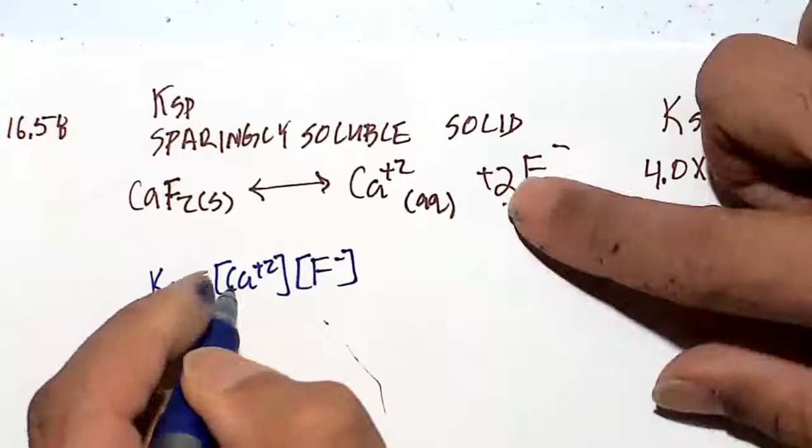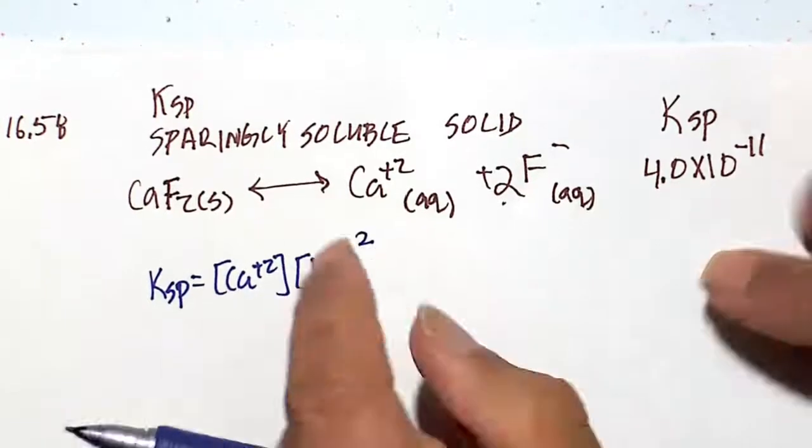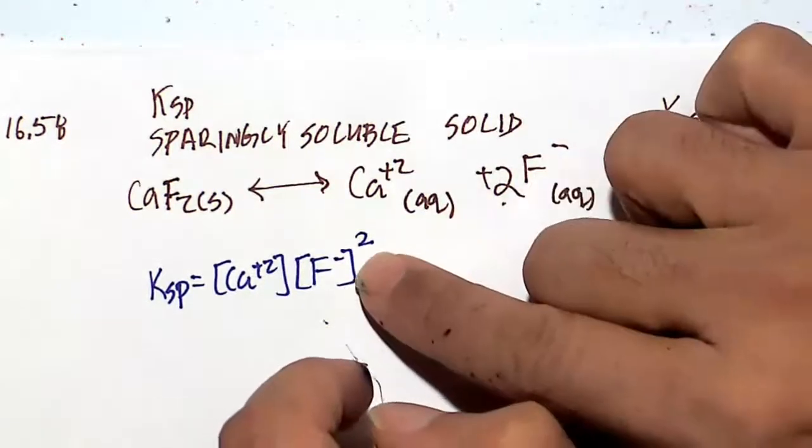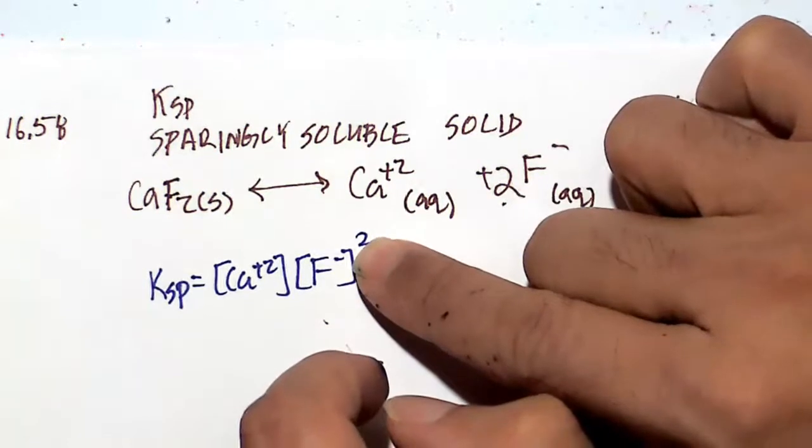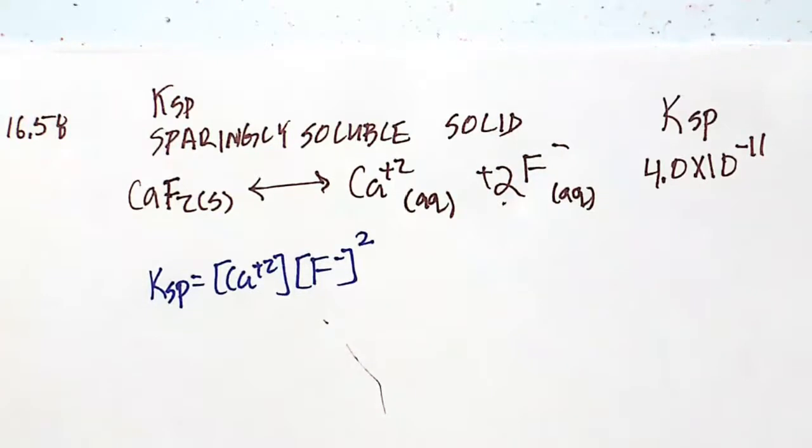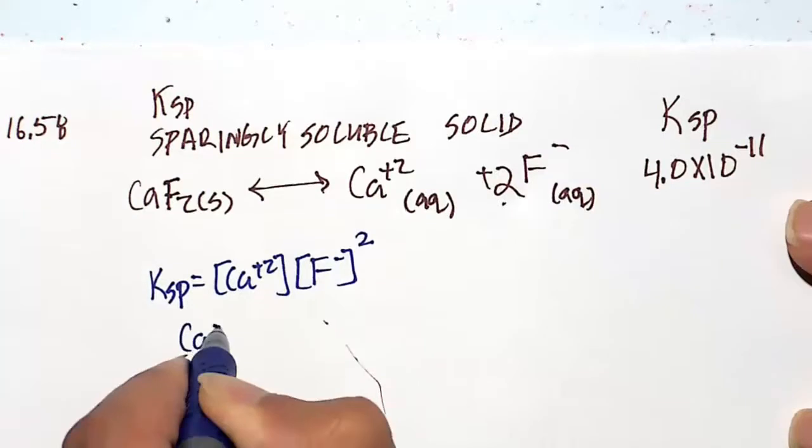So writing our Ksp, we have calcium ion times the fluoride ion, its concentration. Don't forget to square the fluoride ion because we have 2 moles of F minus. So in the law of mass action, that becomes an exponent. Products over reactants raised to stoichiometric coefficient. So stoichiometric coefficient for the fluoride ion is 2.